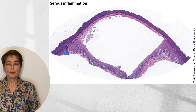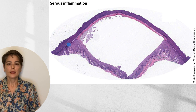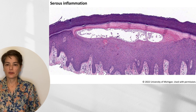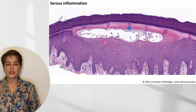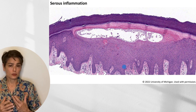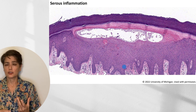Here you can see a low-power view of a friction blister in acral skin. Notice the thickened stratum corneum. Due to mechanical trauma, we've had injury to these cells, which has led to increased vascular permeability, and this in the clinical situation would be filled with fluid. At higher magnification of a different area of the same blister, you can see this fluid, which characteristically does not have cells in it, present just below the stratum corneum — that is serous inflammation. If you look at this fluid grossly, it will be clear straw-colored.